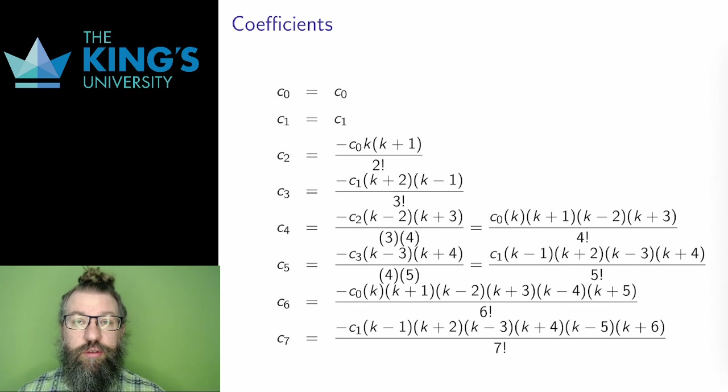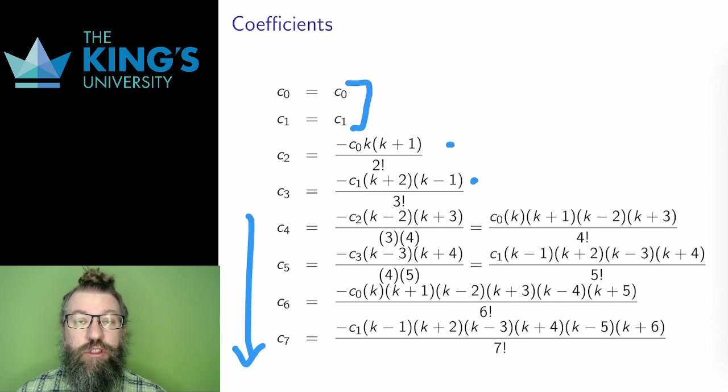Now I start calculating coefficients. I'm not going to talk about all the steps here, but I am just using the recurrence relation. I used a special case to calculate c2 and c3 from the individual terms, and then the general pattern for c4 and onward. Here are the first eight coefficients. Remember again that c0 and c1 are unknowns determined by the initial conditions.